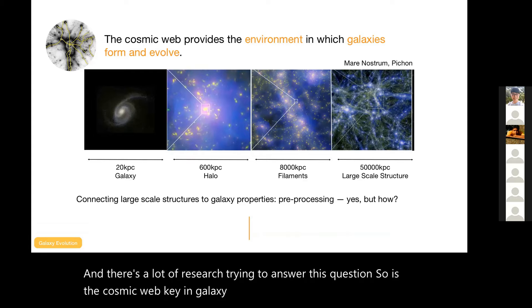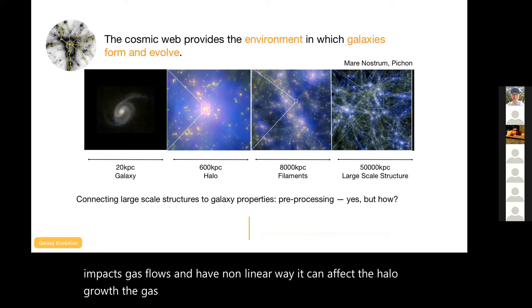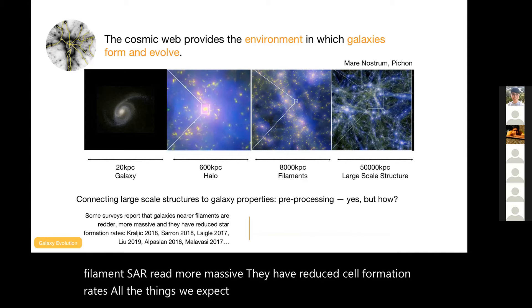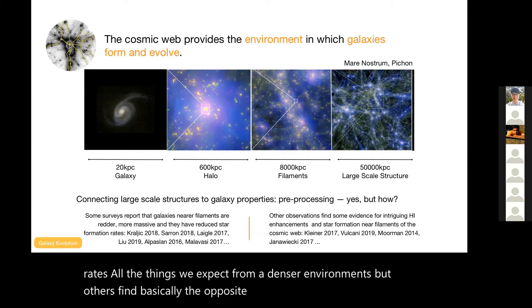There are multiple ways in which the cosmic web could affect the growth of a galaxy. Just because the large scale structure impacts gas flows in a nonlinear way, it can affect the halo growth, the gas accretion. To answer this, people have used different samples and different ways to define the cosmic web. So it won't surprise you that some people find that galaxies near filaments are red, more massive, have reduced star formation rates - all the things we expect from denser environments - but others find basically the opposite and H1 enhancement near filaments of the cosmic web. They find that galaxies in filaments are actually more star forming, that they assist the gas cooling and increase the extent of the star formation.